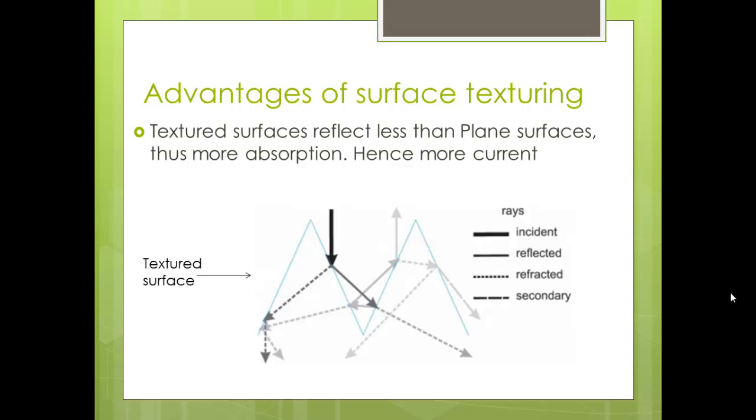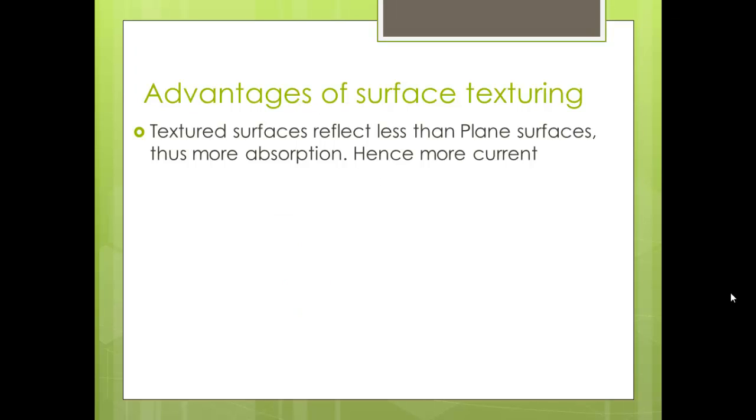Then again some amount of light is transmitted which is absorbed and again it hits the surface. So in this way we have multiple reflections of the same light ray and we have much more absorbed amount of light.